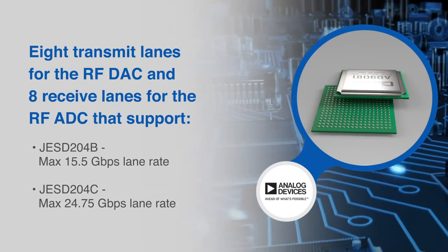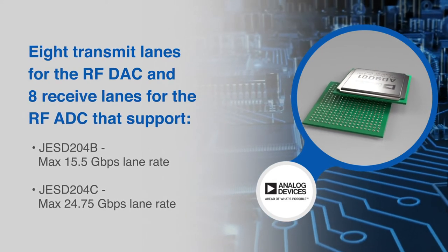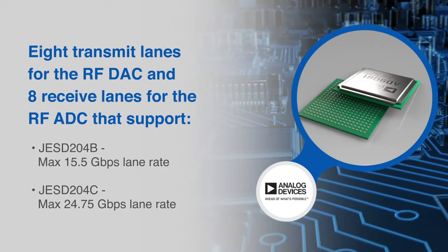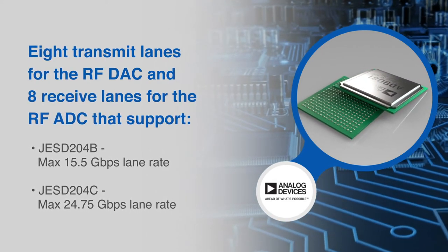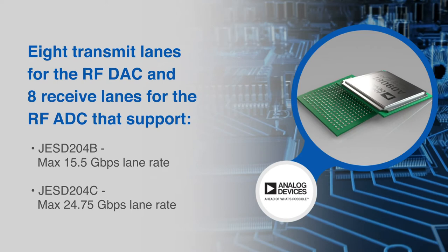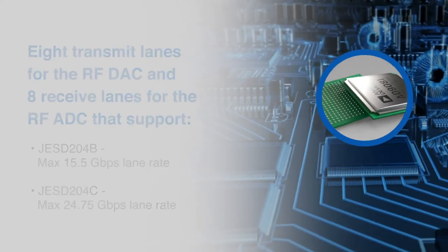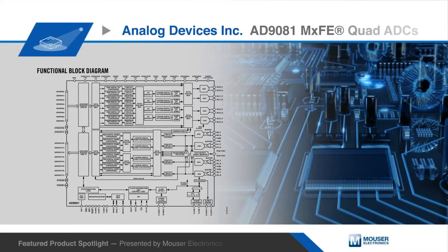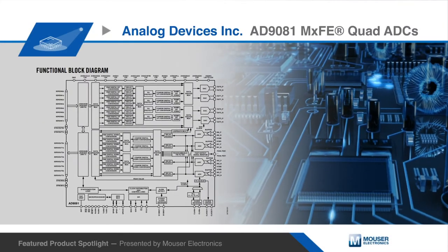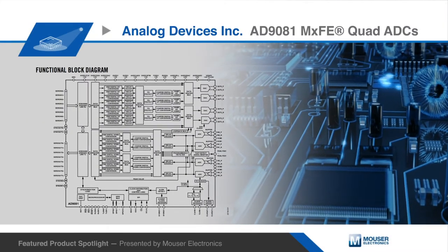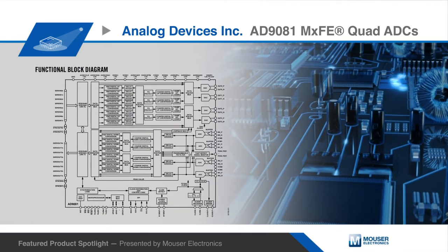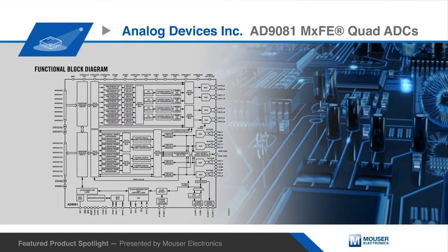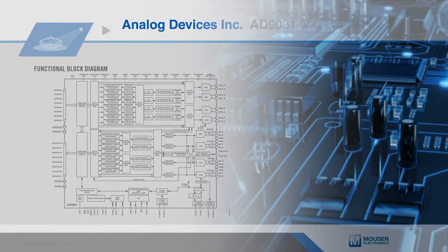An on-chip PLL features multi-chip synchronization with a clock input option for an off-chip PLL. This device also has flexible interpolation and decimation configurations that enable direct-to-RF multiband radio applications.